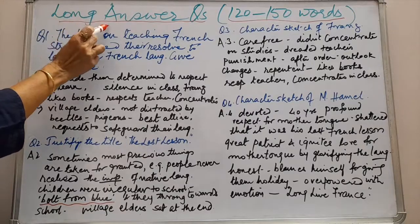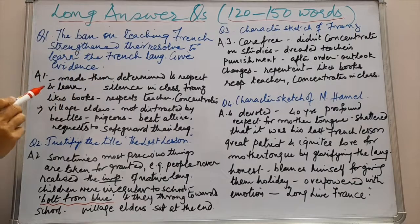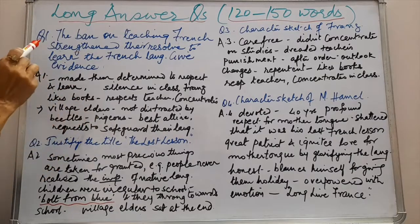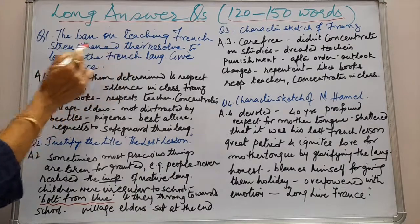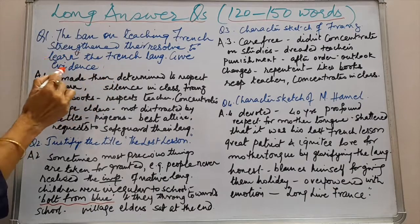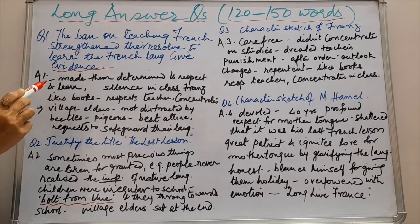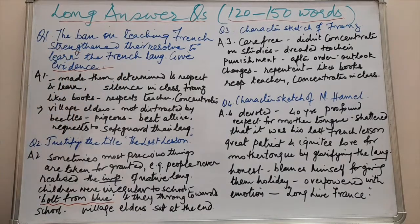Here are long answer questions to be answered in 120 to 150 words. I am going to give you value points which you can elaborate on your own. Question number one: The ban on teaching French strengthened their resolve to learn the French language — give evidence to prove your answer. You have to give evidence from the story. This story clearly brings up the resolve of the French to hold fast to their language and have pride in it.